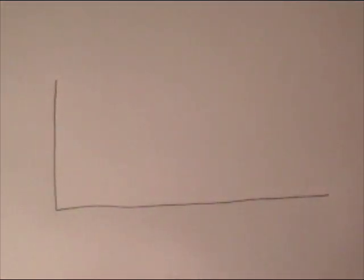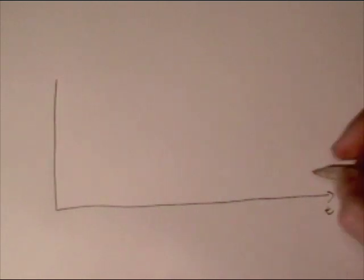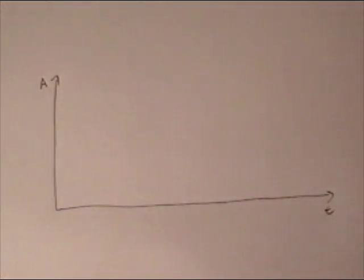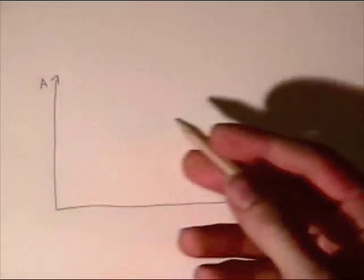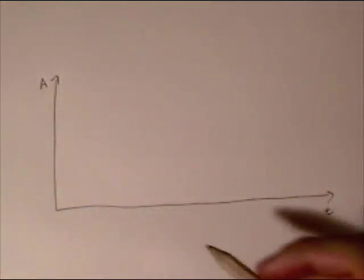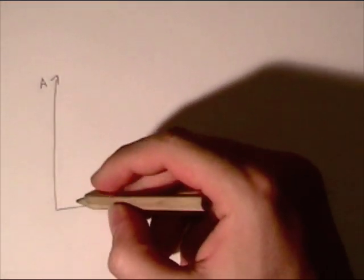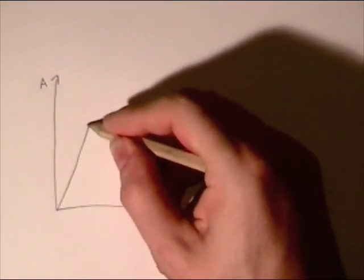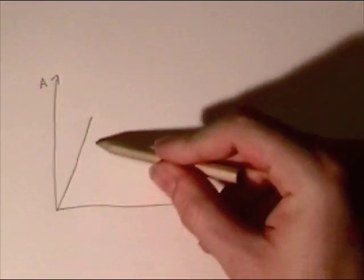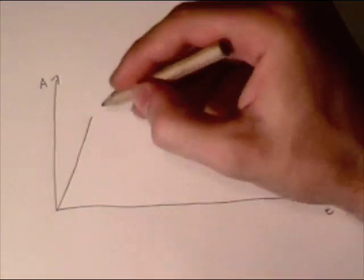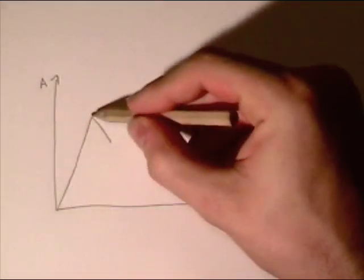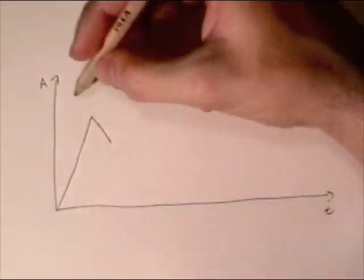An envelope is changing amplitude against time, so it can be plotted on a graph of amplitude against time. Starting from zero time, when a sound occurs, it takes a certain length of time to reach its fullest, loudest volume, before it falls back to a level at which it will sustain. There is the maximum amplitude.